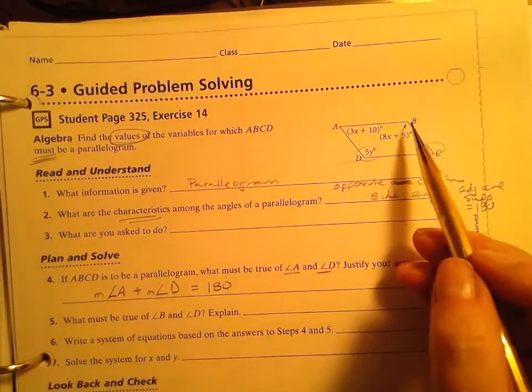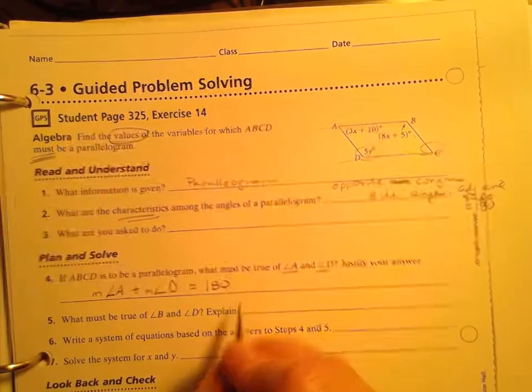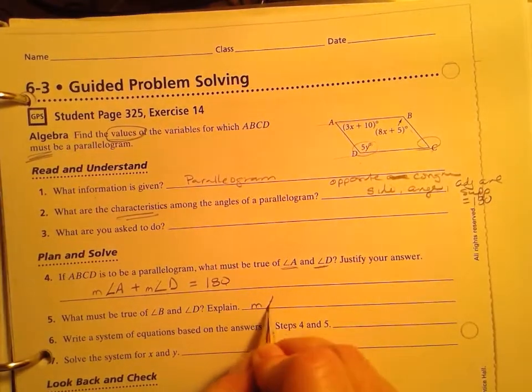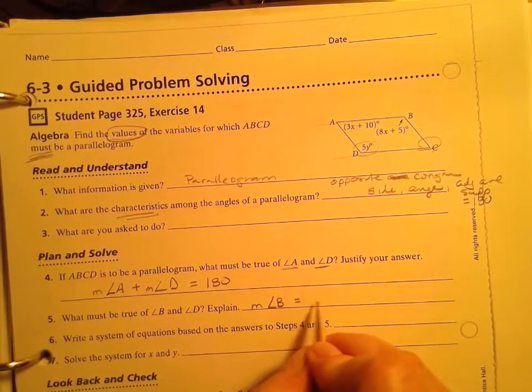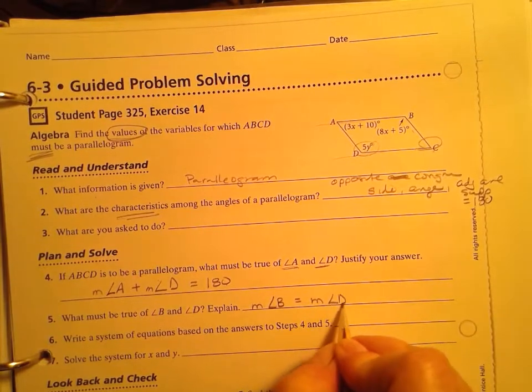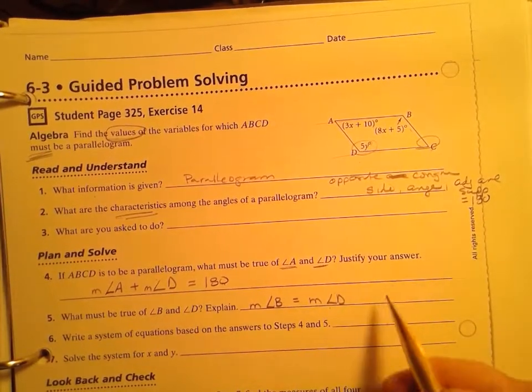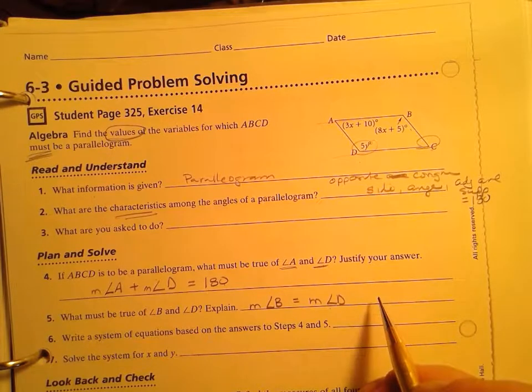And what's going to be true about B and D? By definition, the opposite angles are congruent in a parallelogram.